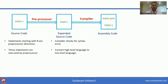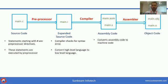This assembly code is given to the assembler, which converts assembly code to machine code and we get object code. Object code has the extension .obj for Windows and .o for Linux operating system.